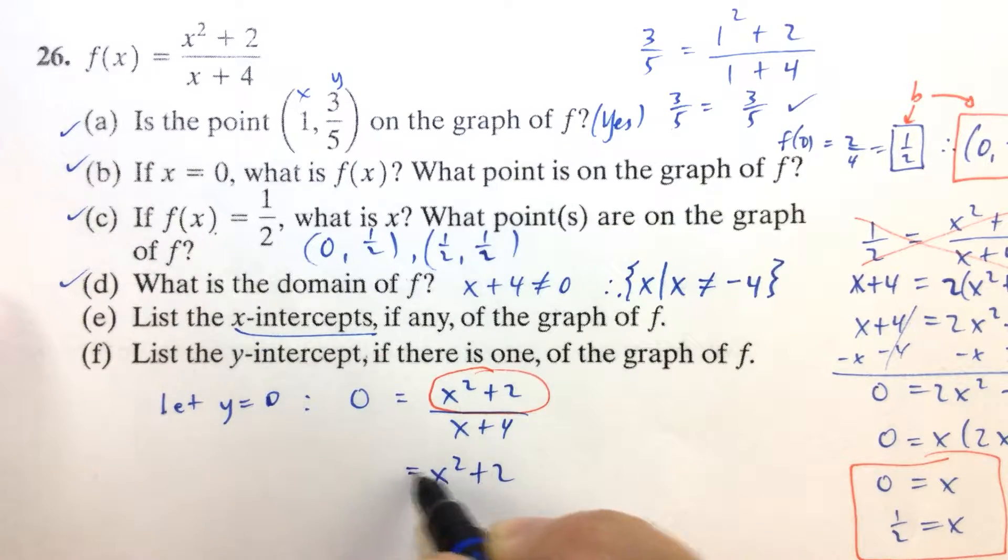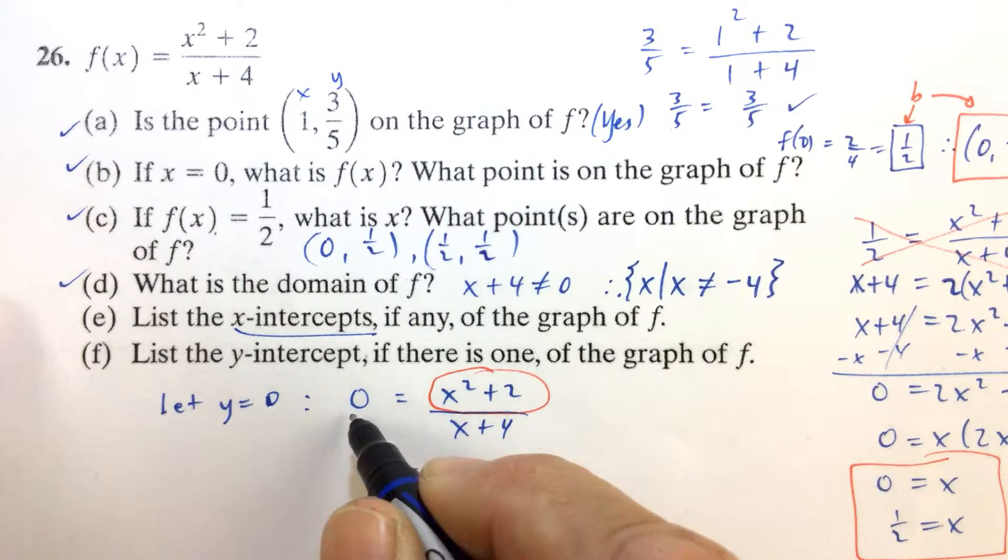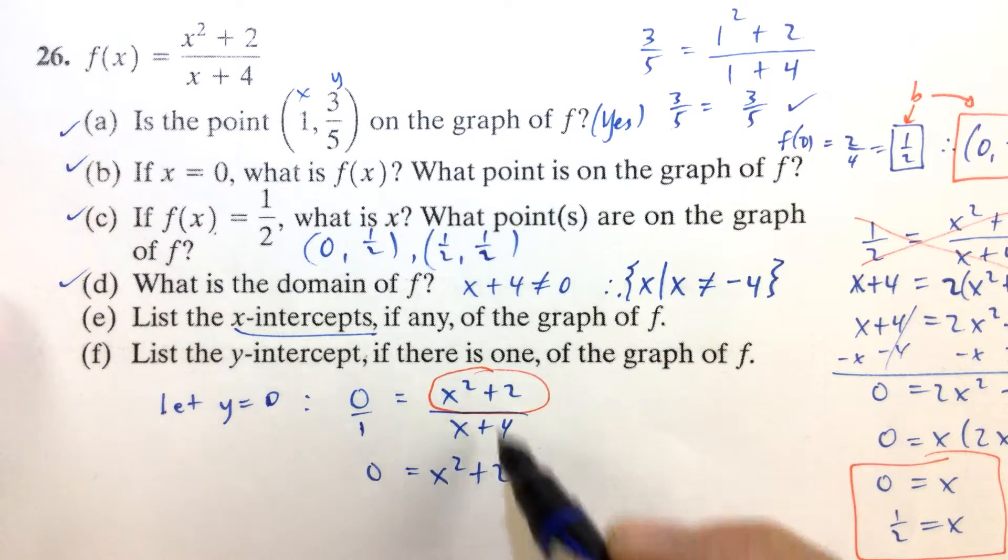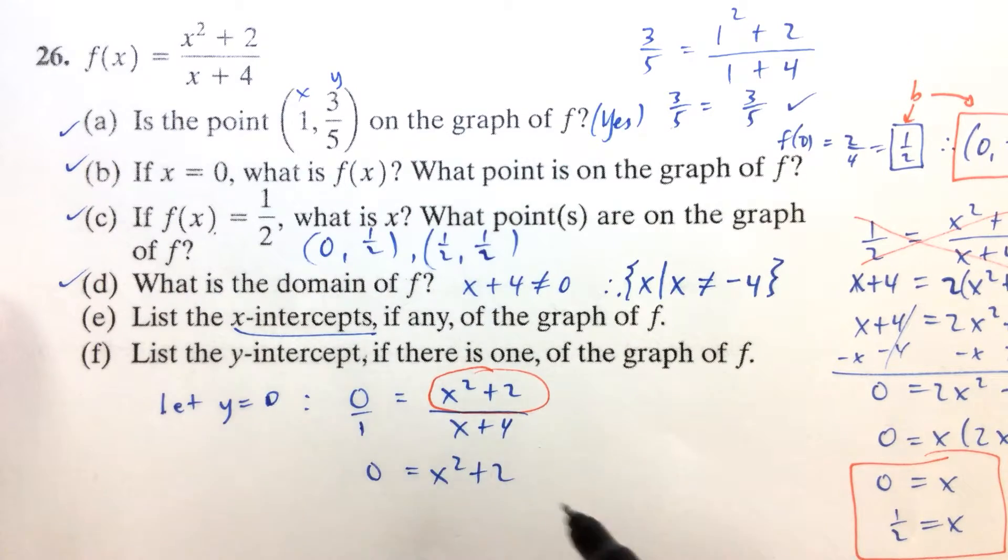And if you think about it like that, if you just want to think about it using cross-multiplication, 0 over anything, whatever, 1, cross-multiply, and you get X squared plus 2 equals X plus 4 times 0, which is 0.